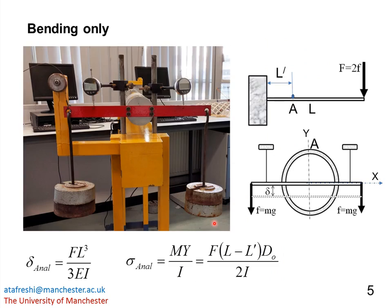For the bending case, loads of 5 kg increments up to 20 kg are applied on each side of the tube. Delta is the tip deflection of the tube, which can be measured by the digital gauges. For better accuracy, the average of the left and right tip deflections is used as the experimental tip deflection for each loading increment. Based on the theories of bending, the analytical tip deflection can be obtained using the standard equation.